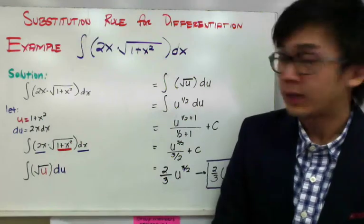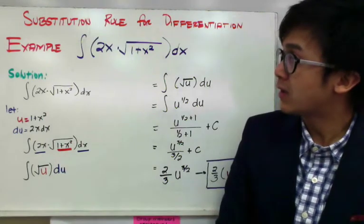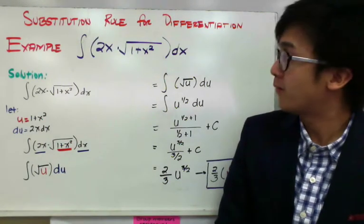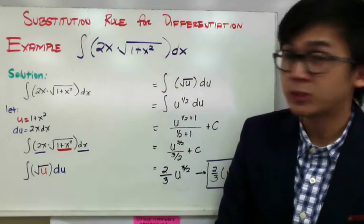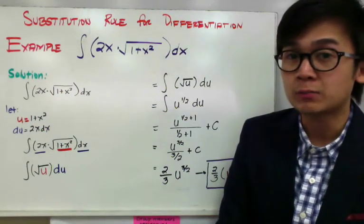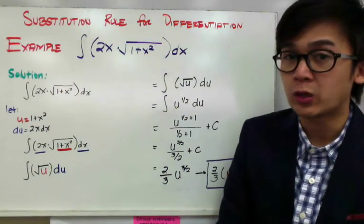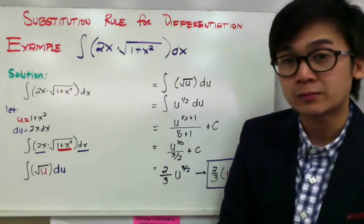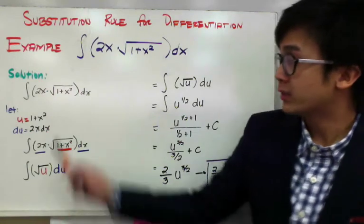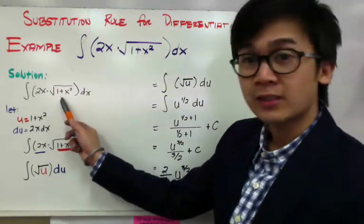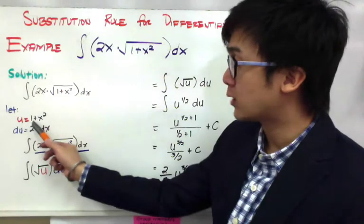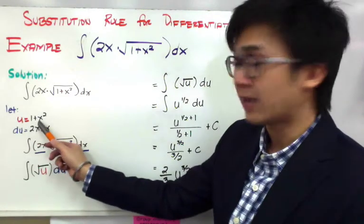When working with the substitution rule, the function or the terms inside the parentheses or inside the radical will always be the terms you're going to substitute u for. So we have the square root of 1 plus x squared, and we set u equal to 1 plus x squared.